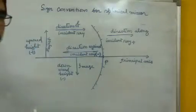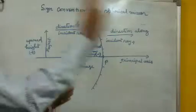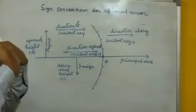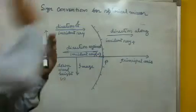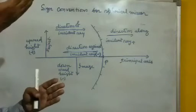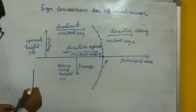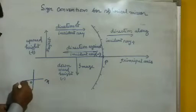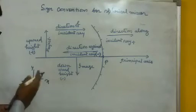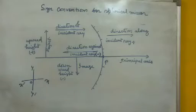So this is all about the sign convention. Against the incident ray from the pole it is negative; along the incident ray from the pole it is positive. Upward positive, downward negative — just like your graph x-o-x' and y-o-y', positive on one side, negative on the other.